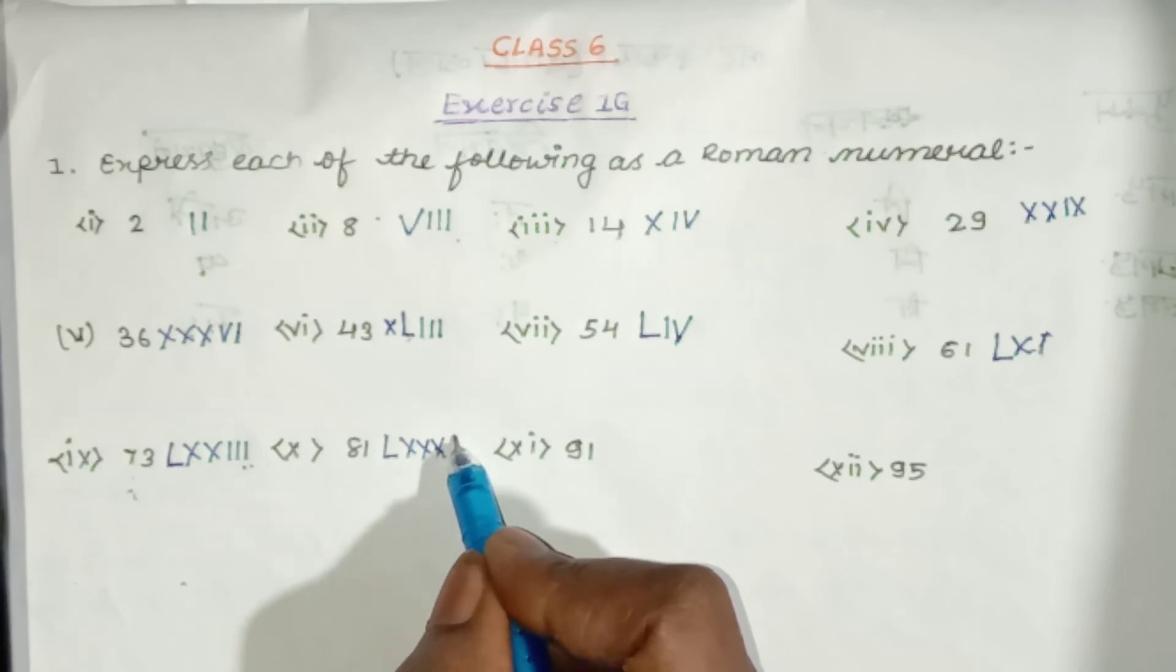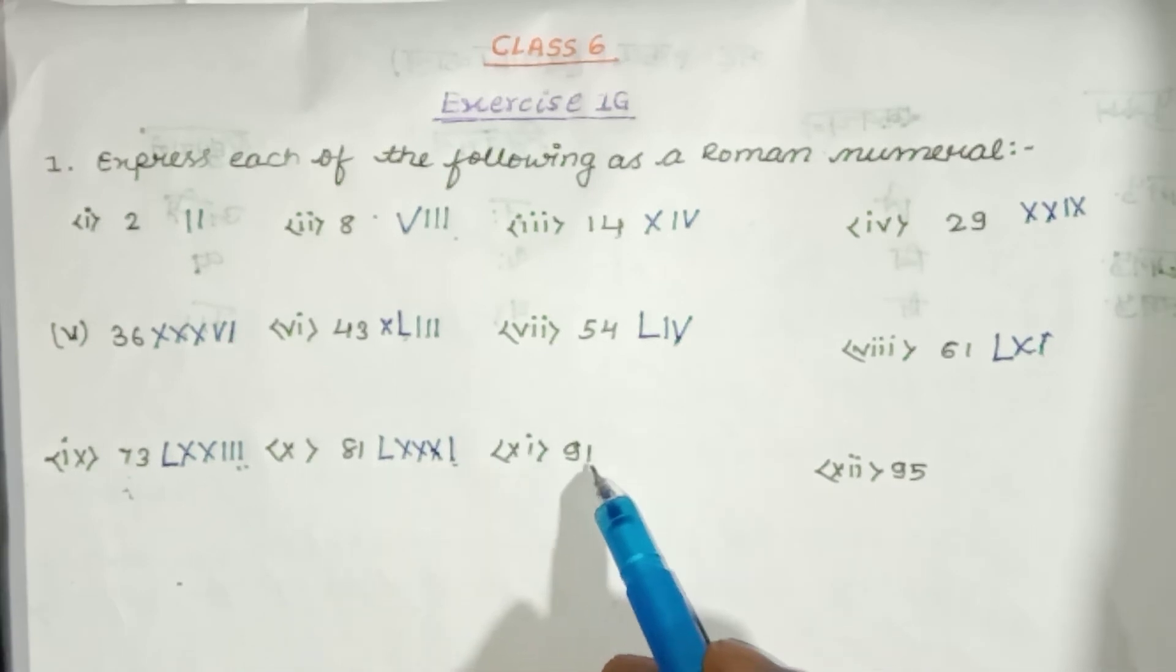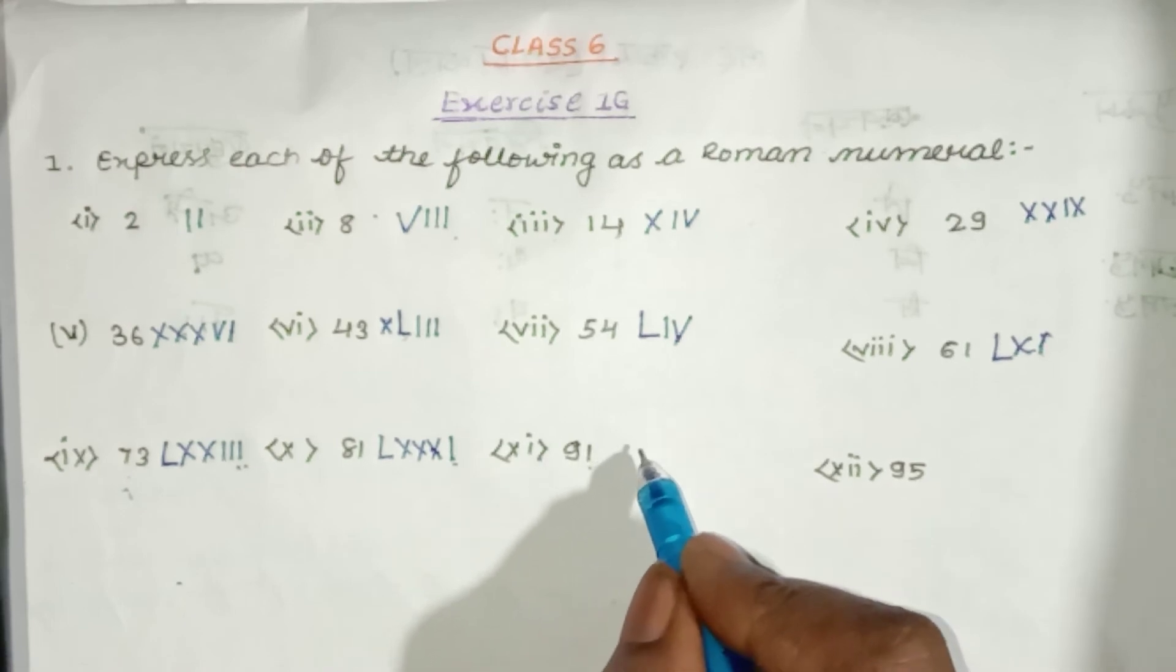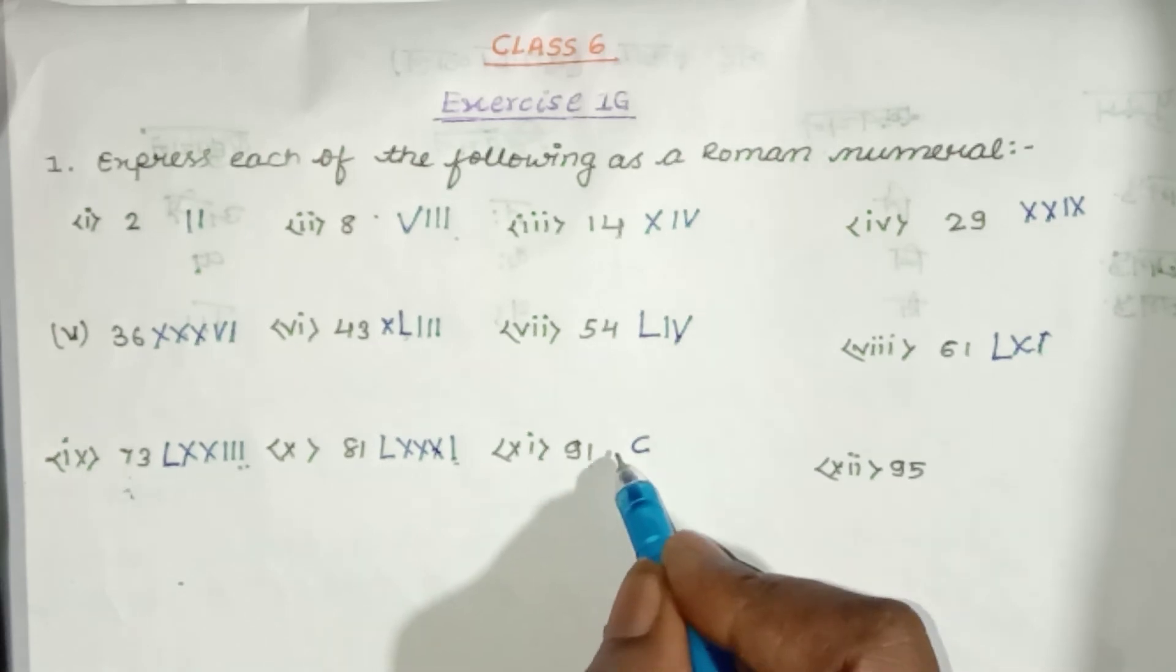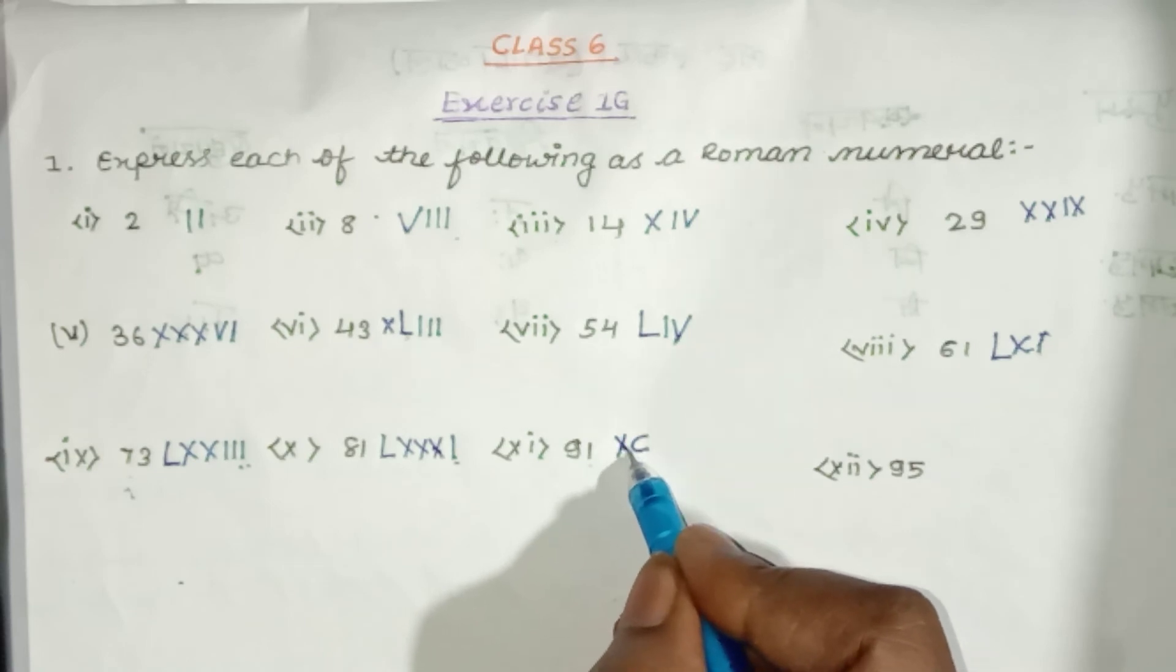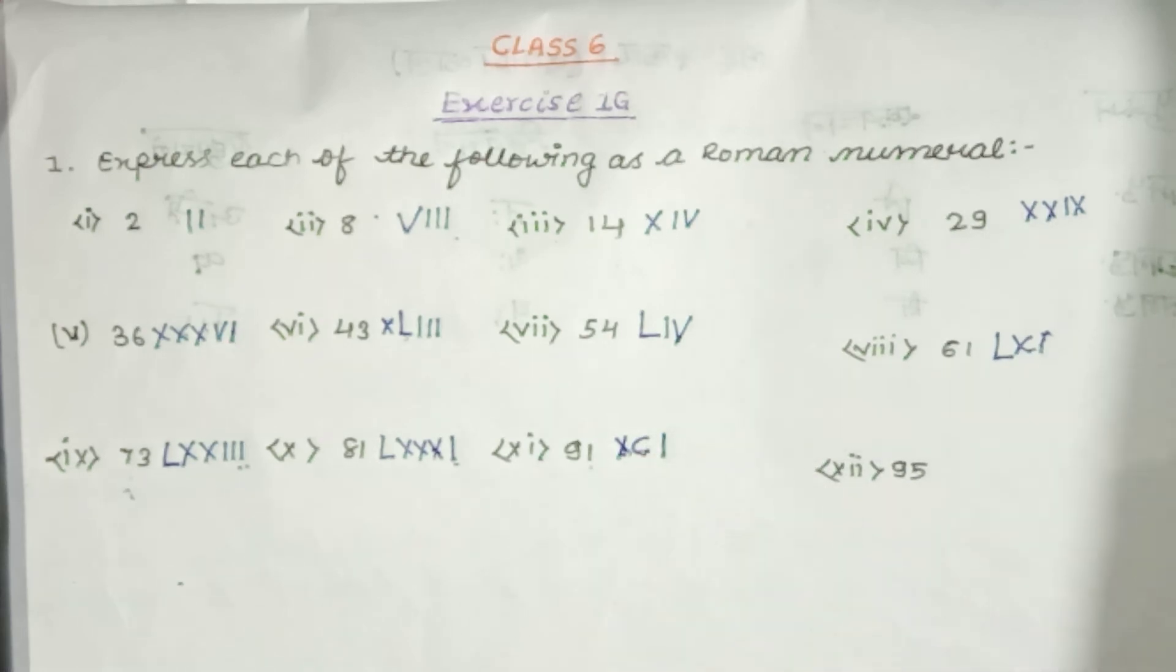91. We have to write 91, so we need to write 100. We will write 100. If we write 100, we will write 10 minus. Then 90 will get 19. We will write 10 minus. We will write 100 and write 10 minus. We will write 90. Now we add 1 to 1 and add 1 to 1. 91.